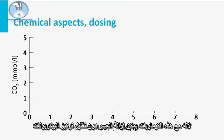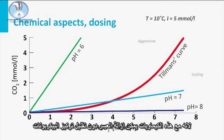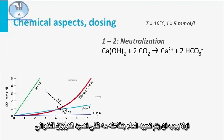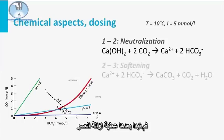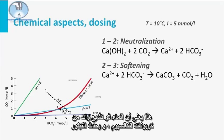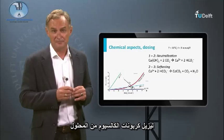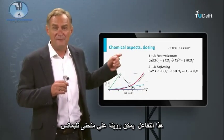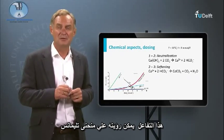When lime or caustic soda is used for softening, two different reactions can take place. First, the water should be conditioned by reacting with the aggressive carbon dioxide, and then the softening process will take place. This means that the water is supersaturated with calcium carbonate and crystallization occurs, removing the calcium carbonate from the solution. These reactions can be visualized in the Tillman's Curve.